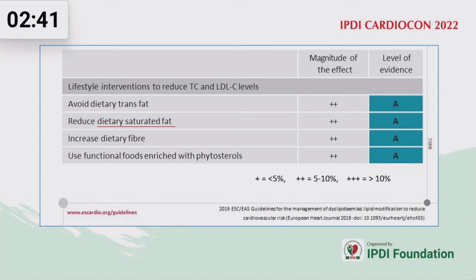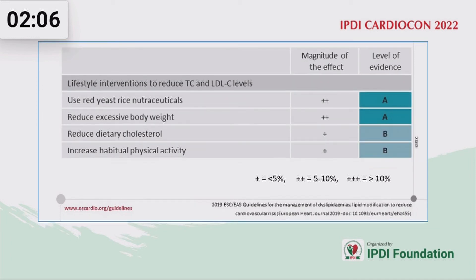According to the ESC guideline, lifestyle interventions to lower LDL cholesterol include reducing trans fat, reducing dietary saturated fat, and increasing dietary fiber. Each of these has a magnitude of effect of 5–10% LDL lowering — comparable to the 6% reduction from every doubling of statin dose. Individually they each have the potential for 5–10% reduction, and in combination they may produce a prominent reduction in LDL. Additional measures include reducing excessive body weight, reducing dietary cholesterol, and increasing habitual physical activity. Putting all these together through structured lifestyle intervention, we can help manage LDL cholesterol to target.